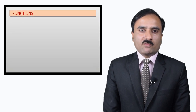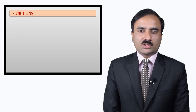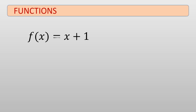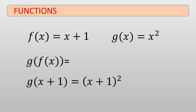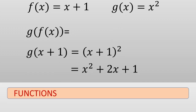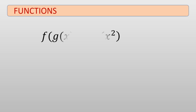Similarly we can evaluate a function on another function. Consider f of x equals x plus 1 and g of x equals x squared. Putting f of x into g of x in place of x gives g of f of x equals x plus 1 whole squared, which equals x squared plus 2x plus 1. And putting g of x into f of x gives f of g of x, which simplifies to x squared plus 1.